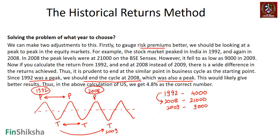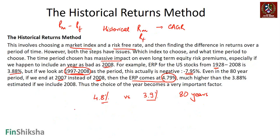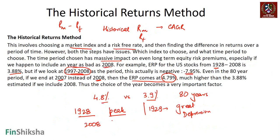Since 1992 was a peak, we should end the returns calculation at 2008, which was also a peak. This approach has two issues: first, you cannot look at the current value because you don't know where you are in the market cycle today — whether at a peak, trough, or somewhere in the middle. Second, you need sufficient history. For the US, we get 4.8% as the correct number because 1928 was a peak — 1929 was when the Great Depression happened — and 2007 end was also a peak before markets cracked.